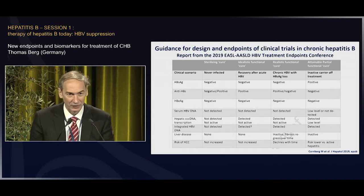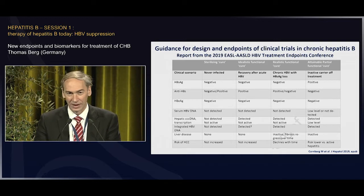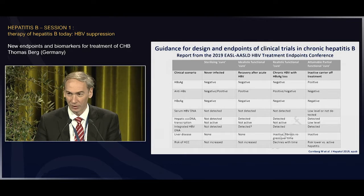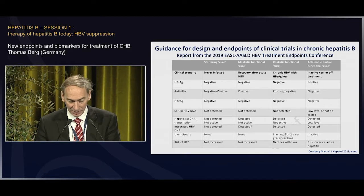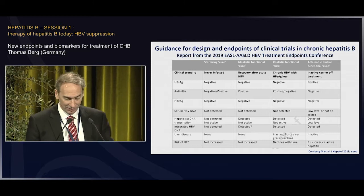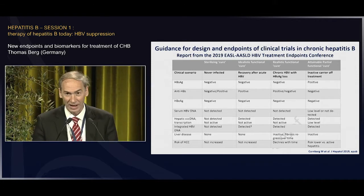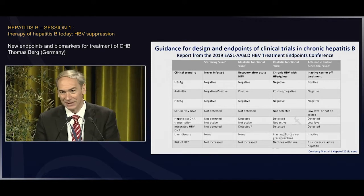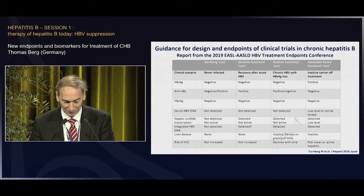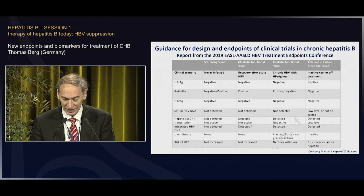This slide is a kind of a summary of what the committee came up with as a recommendation for what could be the future endpoints in chronic hepatitis B. You can see here, from left to right, it's more easy — or the other way, more difficult — to achieve these different endpoints, starting from sterilizing cure to attainable partial functional cure.